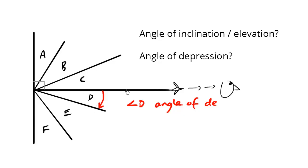This here, angle D, is the angle of depression, whereas the angle of inclination or elevation is angle C. This here is the angle of inclination or elevation because when you're happy, when you're elevated, when your mood is elevated, you tend to look up.